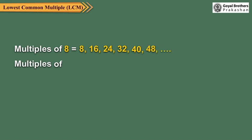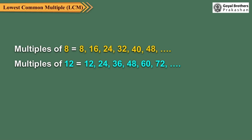And multiples of 12 are 12, 24, 36, 48, 60, 72 and so on. Thus, common multiples of 8 and 12 are 24, 48 and so on.